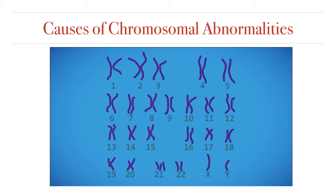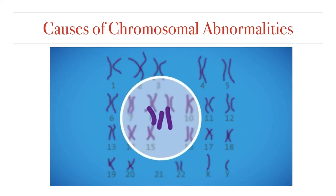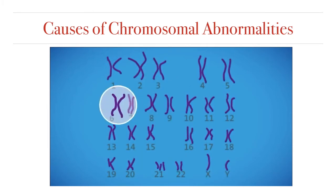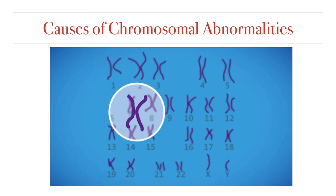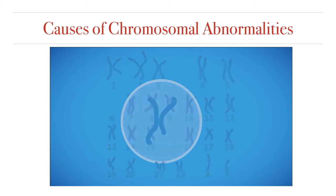Chromosomal abnormalities can be either numerical or structural. Numerical means there might be an extra chromosome, like in this example, or there could be a missing chromosome instead. A structural abnormality occurs when the chromosome structure has been altered in one of several ways — for example, where a piece of chromosome number 6 is missing.